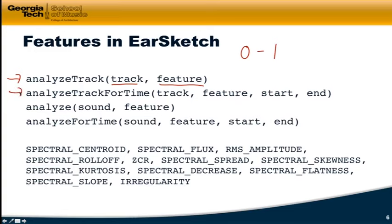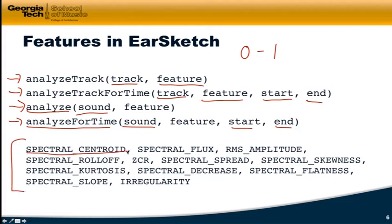The next one is a closely related one, analyzeTrackForTime. So we're still analyzing a track, a specific feature, but instead of on the entire track, we're doing the average value of that feature between a starting time and an ending time, specifying time like we always do in your sketch as a floating point number. And then these next two are the comparable things. But instead of analyzing on a track, you give it a sound constant. And it will analyze, in the case of the analyze function here, it will do the entire sound and give the average value of the feature across the entire sound. AnalyzeForTime will give you the average value of that feature between the starting time and ending time. These are all the features that are supported. You can see spectral centroid is the first one on the list there.